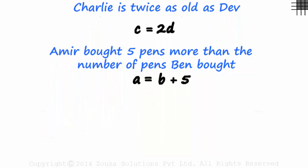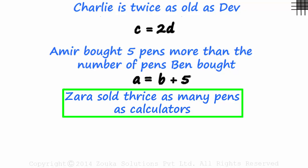Now look at this line. Zara sold thrice as many pens as calculators. Pause the video and try to write the equation with P and C as variables.